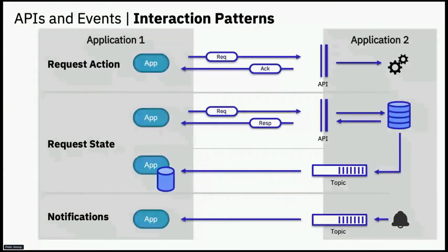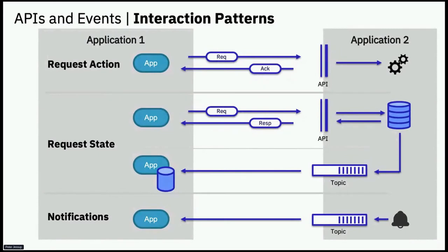Events are therefore becoming more central to many application designs. While APIs are very useful for the kinds of integrations we've been looking to do in the past, the kinds of applications we're now building can be pretty data-heavy and very latency-sensitive. These event patterns are more and more important to application designers. You might notice we placed the topics at the boundary of the application in the same place as the API boundaries — and that was deliberate. We should be thinking about these topics as just another way for one application to interact with another, managing these interfaces in the same way as we manage APIs.